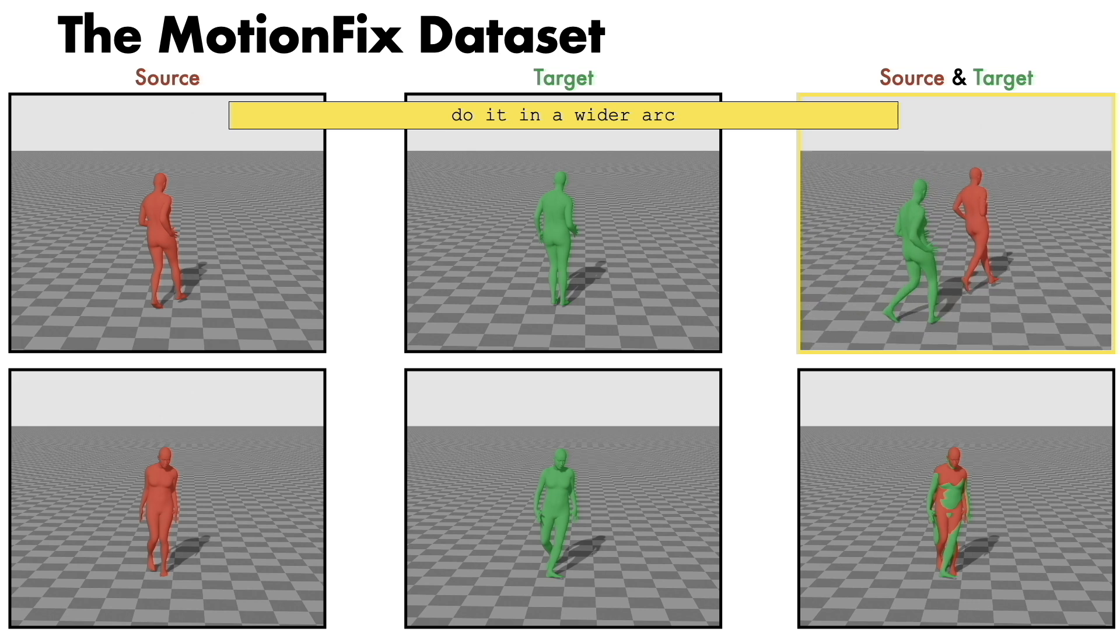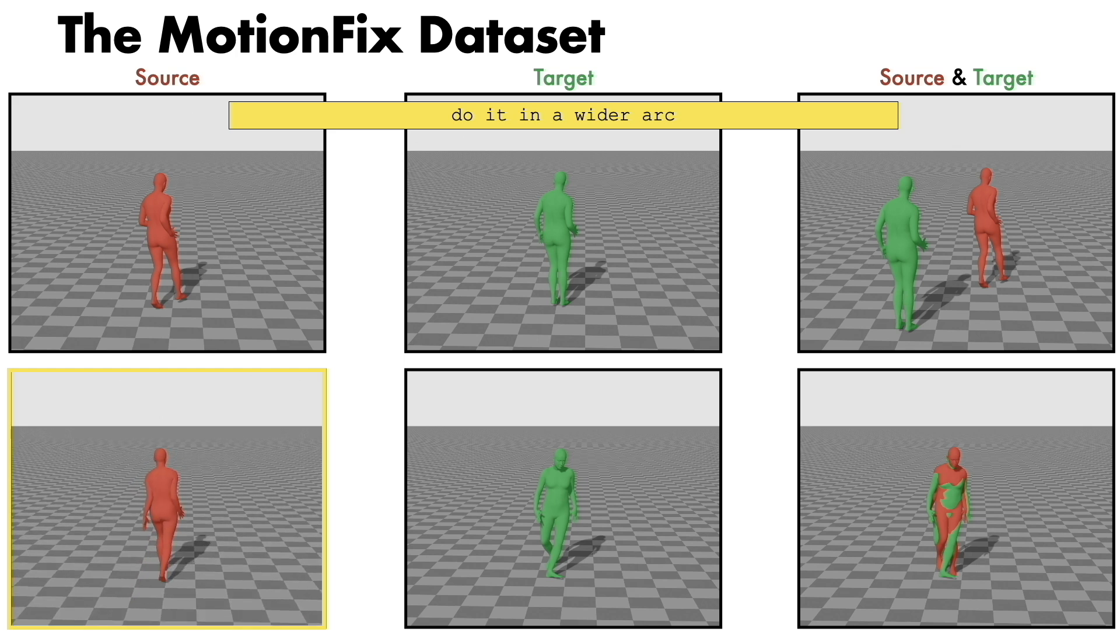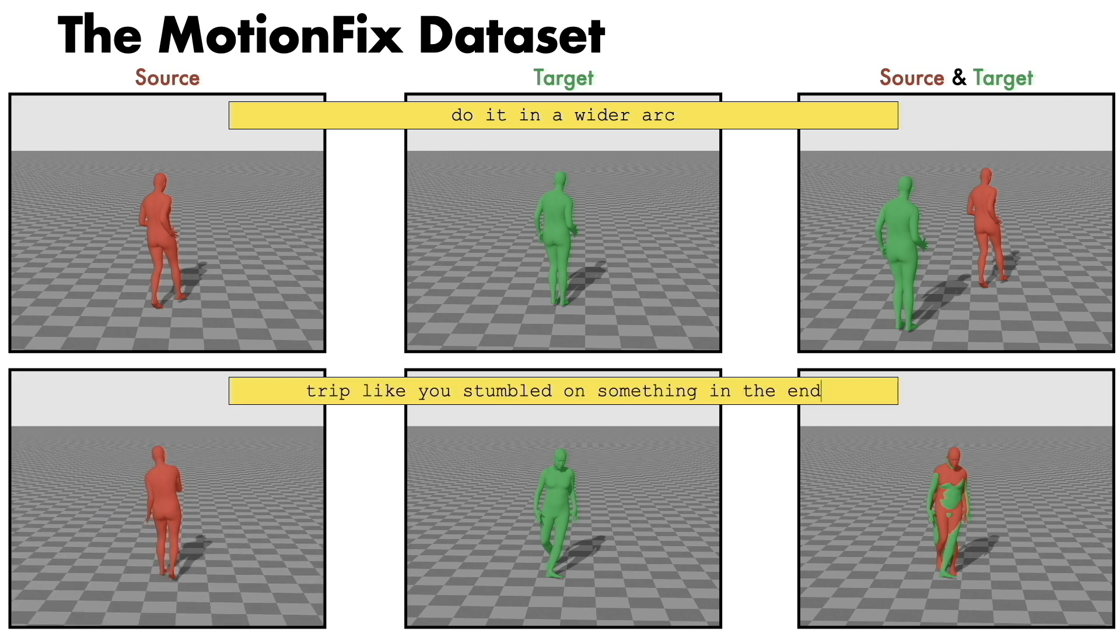Furthermore, it includes pairs that differ in a temporal segment, such as the example trip like you stumbled on something in the end.